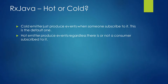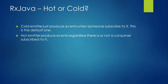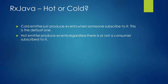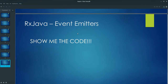Last but not least, what is a hot or cold observable? A cold observable is an emitter that produces events only when someone subscribes to it — this is the default type of emitter. You often hear 'hot or cold observable' because of RxJava 1, but you may also hear 'hot or cold emitter.' A cold emitter produces events only when someone calls the subscribe method. A hot emitter produces events regardless of whether there is a consumer subscribed to it. That's the basic difference between them.